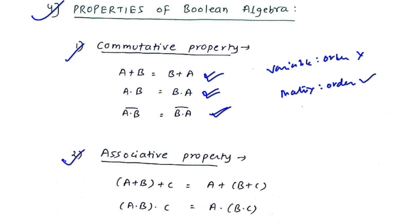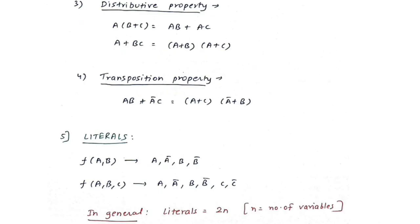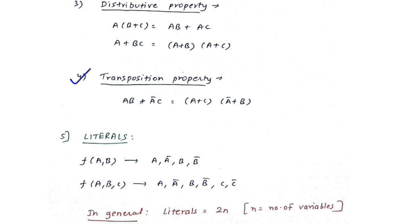The associative property involves changing brackets: (A+B)+C = A+(B+C), and (A·B)·C = A·(B·C) — the result is the same regardless of which bracket is solved first. The distributive property: A·(B+C) = AB + AC, and A+(B·C) = (A+B)·(A+C).